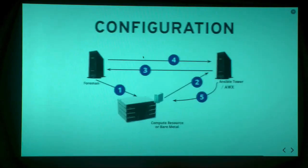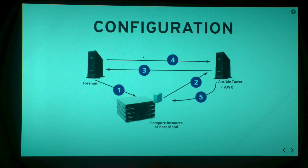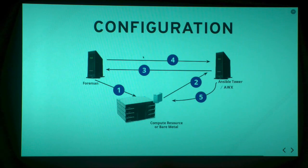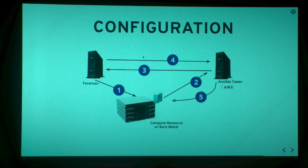There is one last thing — AWX and Foreman have a tight integration feature called callback provisioning. When Foreman is told to provision a machine — bare metal or otherwise — after that machine is provisioned it is told to perform configuration tasks through Ansible Tower, like installing packages. What happens is that when the machine goes to AWX to perform configurations, AWX goes back to Foreman, checks its dynamic inventory, and verifies whether that host is present in all hosts. Only if the machine is present in the inventory will Ansible Tower or AWX proceed with the configuration.